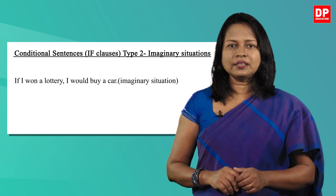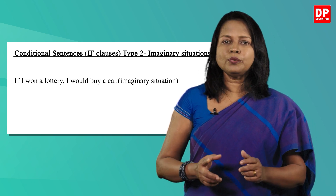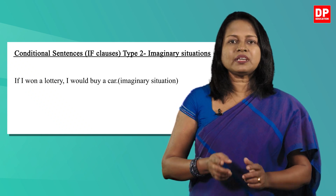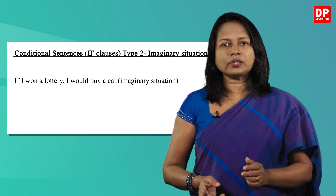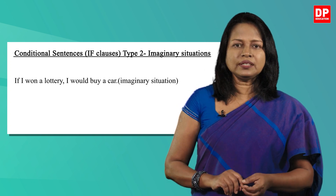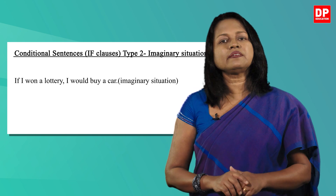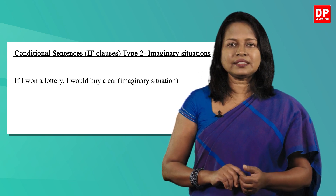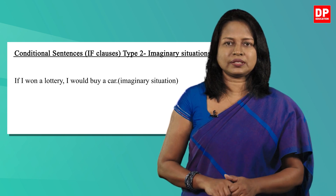But children, fulfilling this condition may be theoretically possible but practically very unlikely, as it is an imaginary situation. So look at the example once again: If I won a lottery, I would buy a car. It describes an imaginary situation. In other words, it talks about a thing which is very unlikely to happen in the future. So type 2 of the conditional sentences talk about imaginary situations.